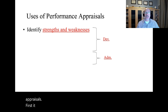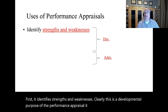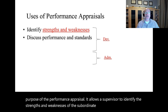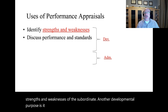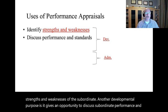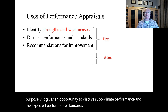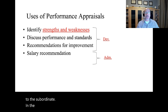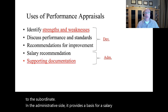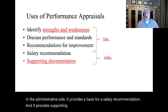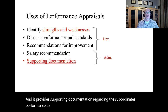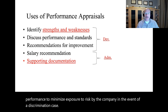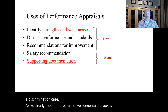The performance appraisal identifies strengths and weaknesses — clearly a developmental purpose. It allows the supervisor to identify the strengths and weaknesses of the subordinate. Another developmental purpose is it gives an opportunity to discuss subordinate performance and the expected performance standards. It also allows the supervisor to make recommendations for improvement. On the administrative side, it provides a basis for a salary recommendation and supporting documentation regarding the subordinate's performance to minimize exposure to risk in the event of a discrimination case. The first three are developmental purposes and the last three are administrative purposes.